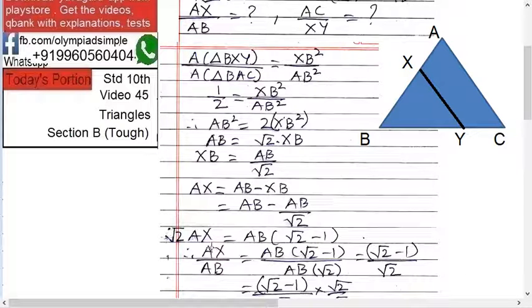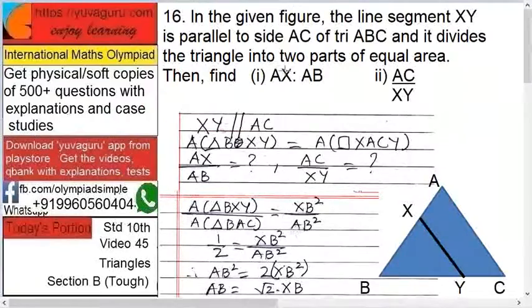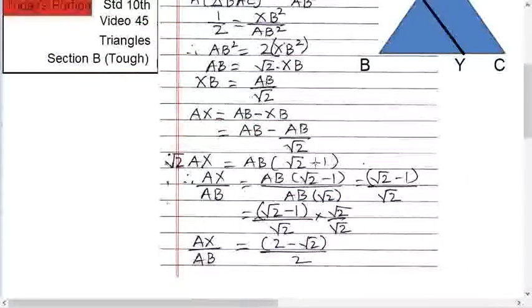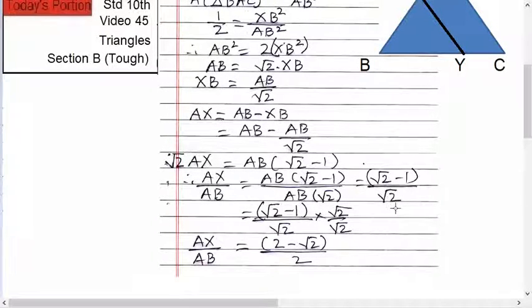This root 2 on the left-hand side. So, root 2 AX equals to AB into root 2 minus 1. But we want AX upon AB, right? AX upon AB. Therefore, AX upon AB equals to root 2 minus 1 upon root 2.